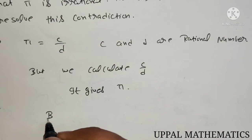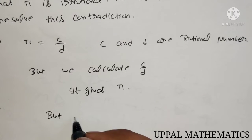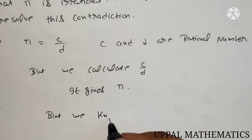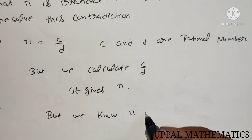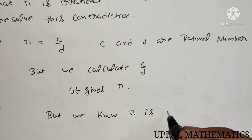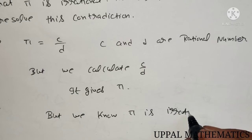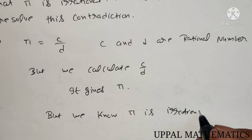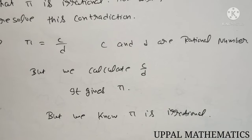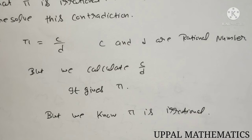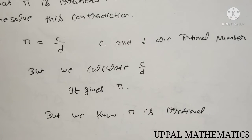But we know that pi is irrational. C upon D gives us pi, and pi is an irrational number. So this means — what happens when we divide C and D? It comes to pi, which is irrational.